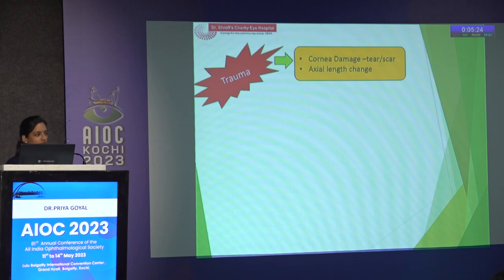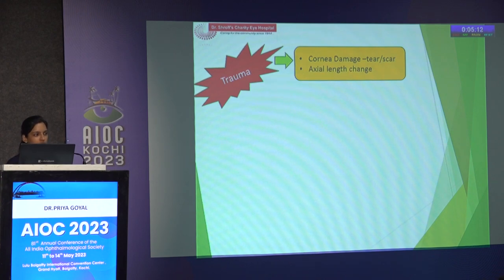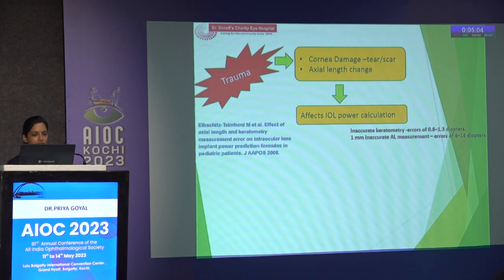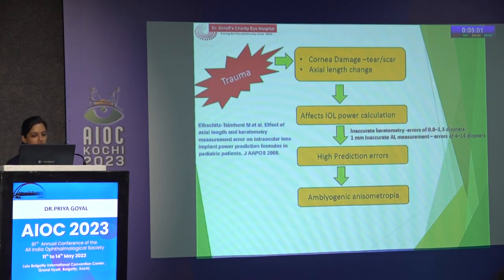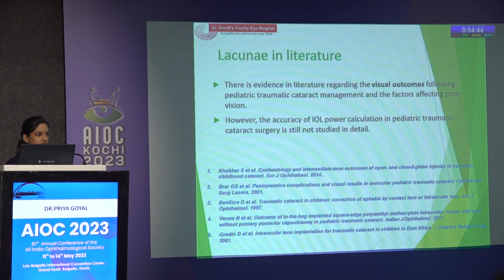After trauma, there is corneal damage from corneal tear or associated scar, and axial length change may occur immediately or months later due to asymmetric eyeball growth. These are the most important factors affecting IOL power calculation. Errors in measurement lead to high prediction errors, which can cause amblyogenic anisometropia and complicated visual rehabilitation. Despite ample literature on visual outcomes following pediatric traumatic cataract management, accuracy of IOL power calculation has not been studied, as most studies have excluded history of trauma.